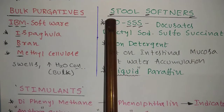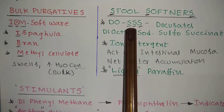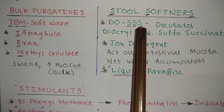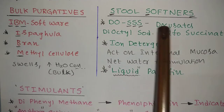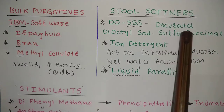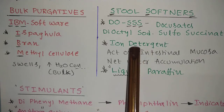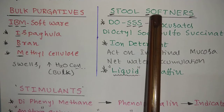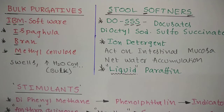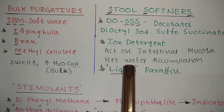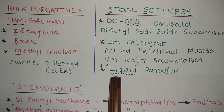The next class is stool softeners. The drug is dioctyl sodium sulfosuccinate, also called docusate — remember it as 'yes yes yes' or triple-R like the movie. It acts as an ionic detergent, acting on the intestinal mucosa to cause net water accumulation, making the hard fecal matter soft and easier to excrete.